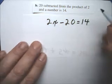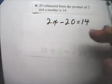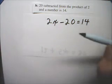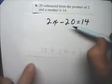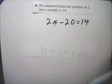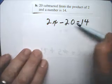20 subtracted from 2 and a number is 14. And once again, you've got to take it apart just like I did. Write what you know. If it says subtracted, put the minus sign down. 20 subtracted from, that's 20 subtracted from the product of 2 and a number is 14. And that makes sense.